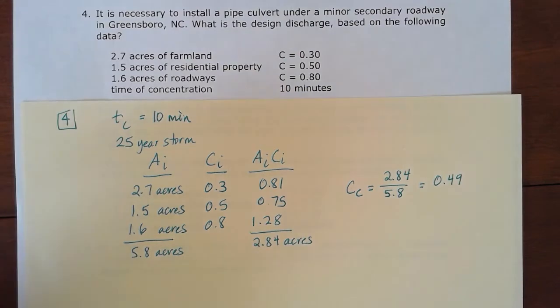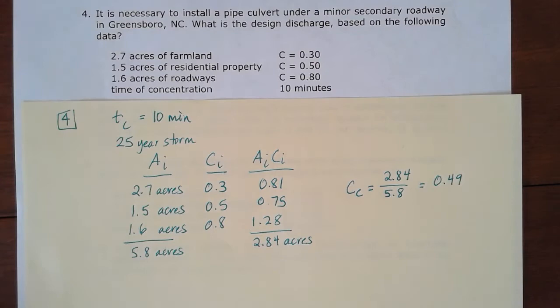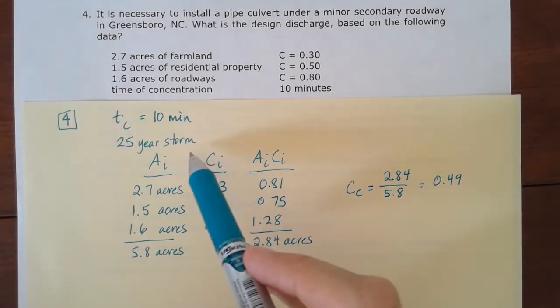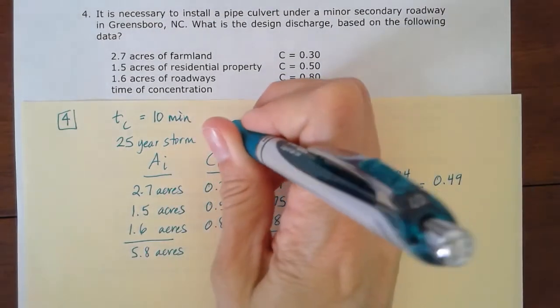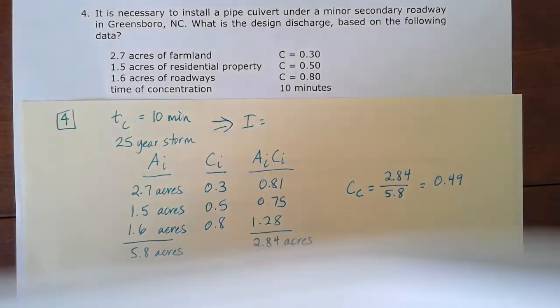And so in order to get that, we're going to have to go to our intensity duration frequency charts for Greensboro, North Carolina. We know that that time of concentration is 10 minutes, and we're looking for the 25-year storm. So from that information, we'll be able to come up with that intensity level. So let's take a look at that here.